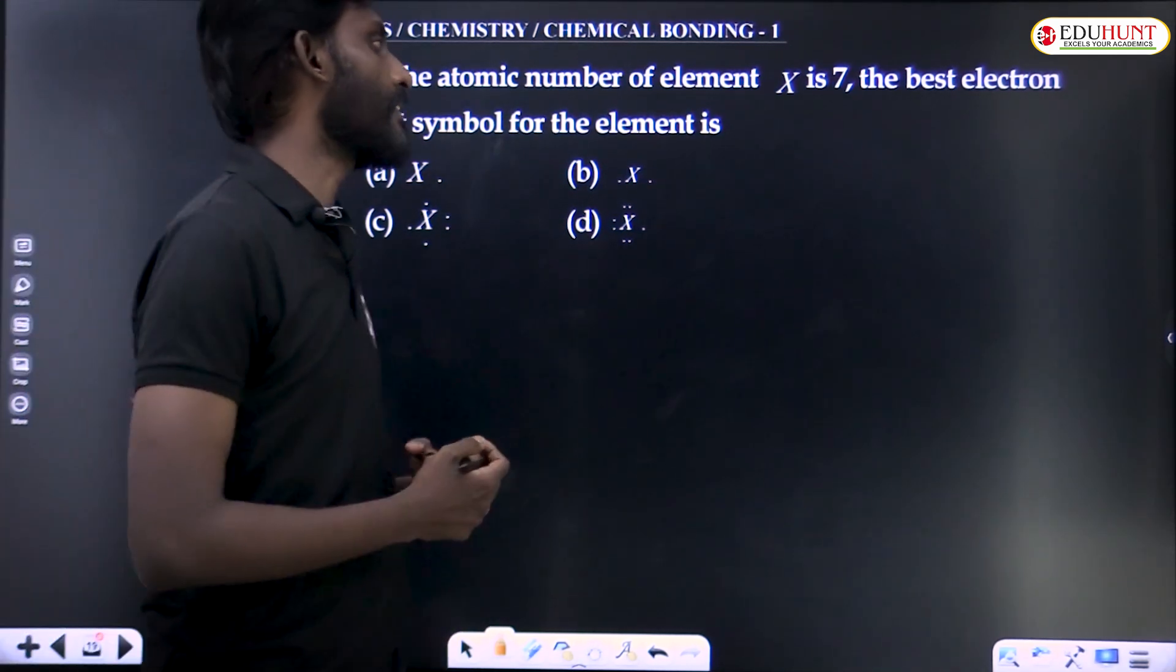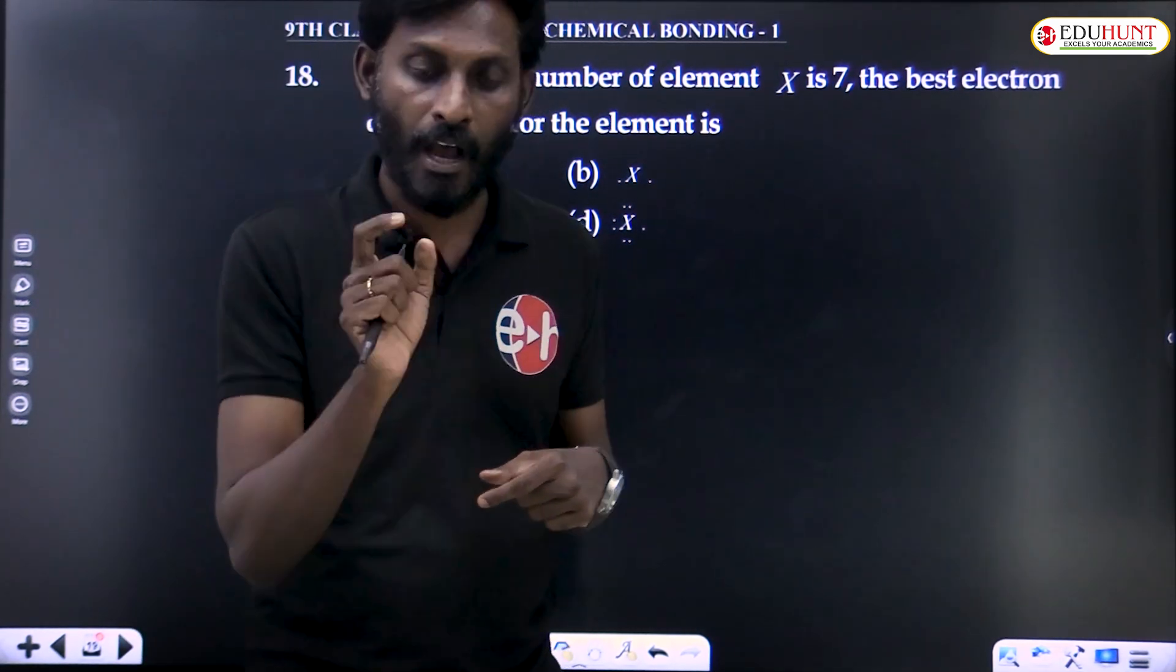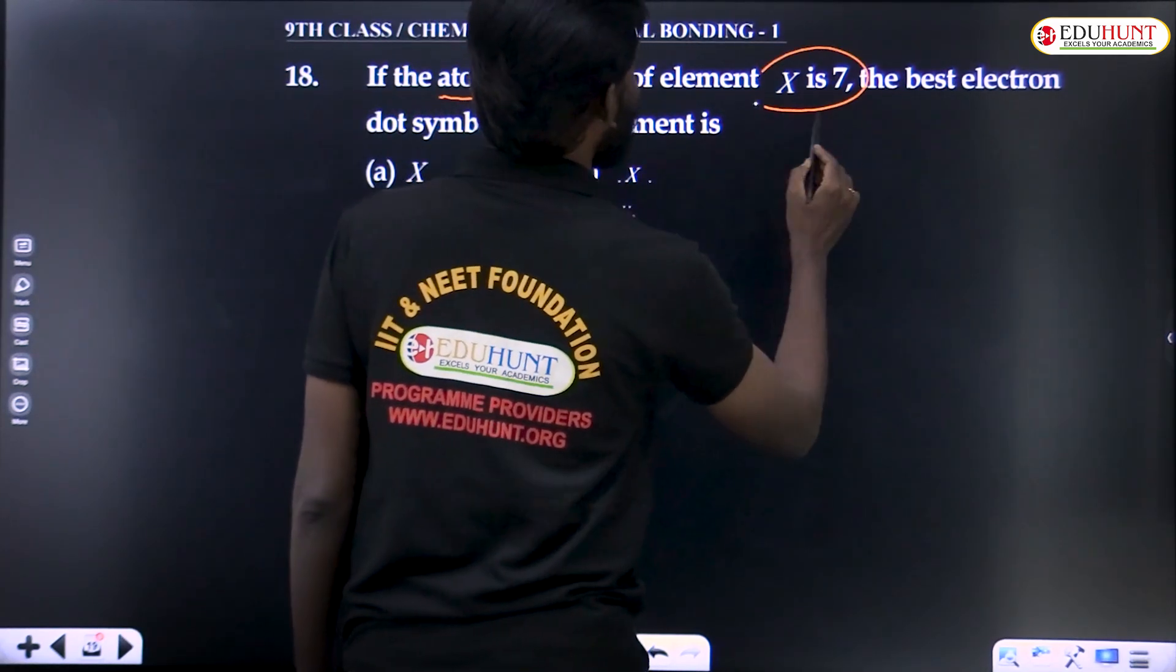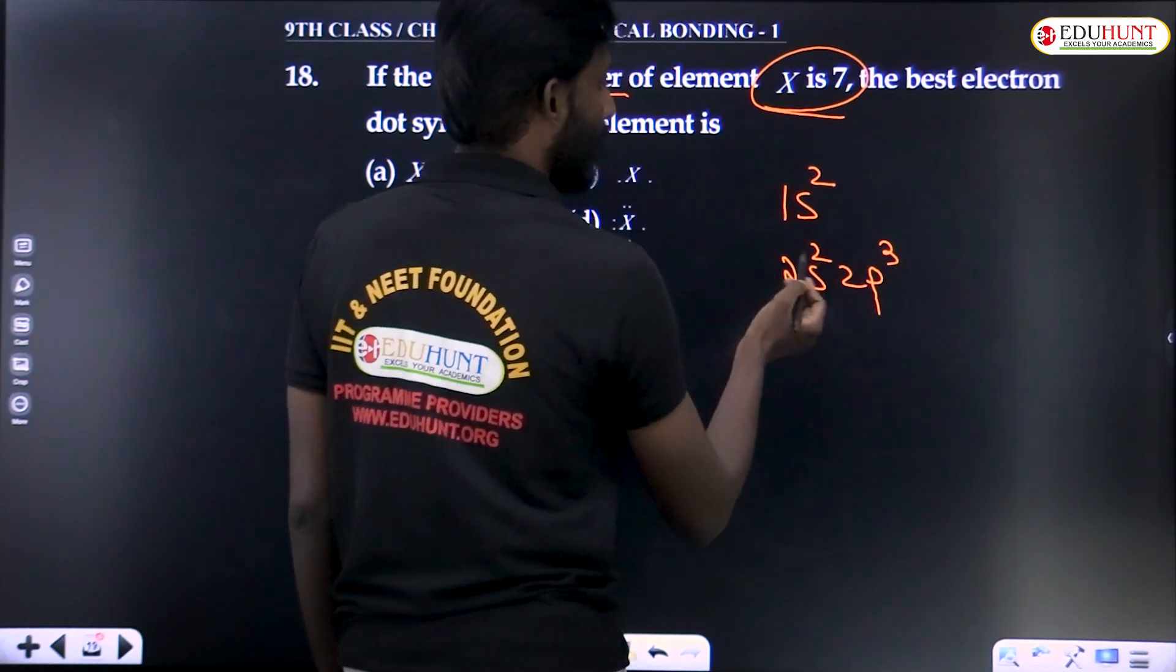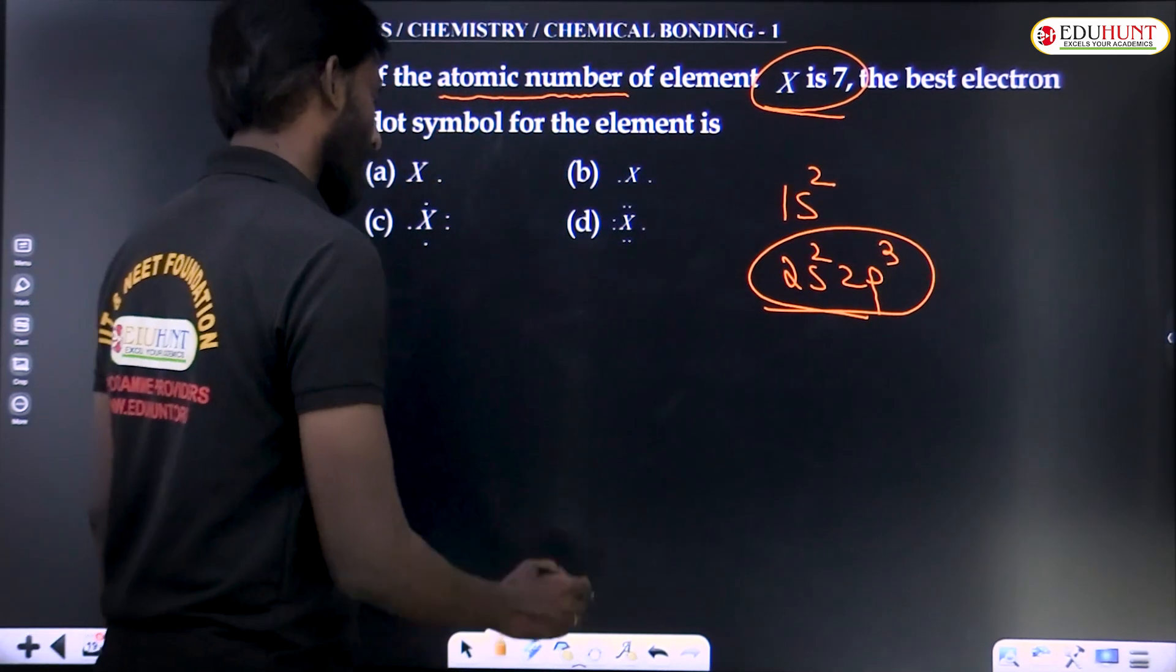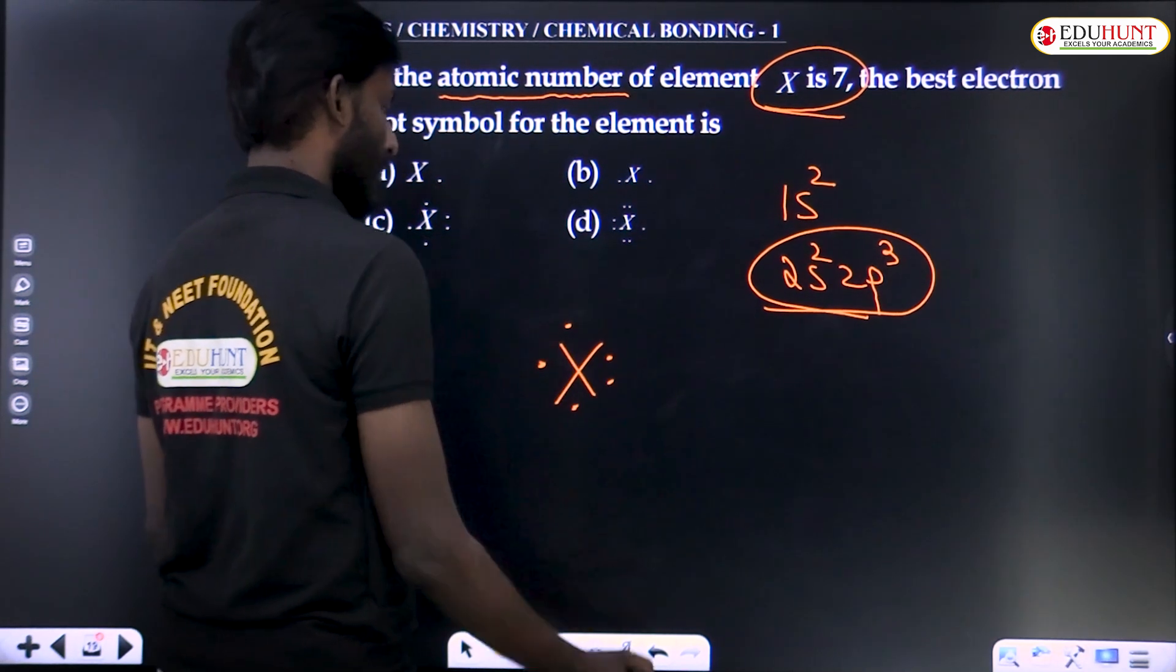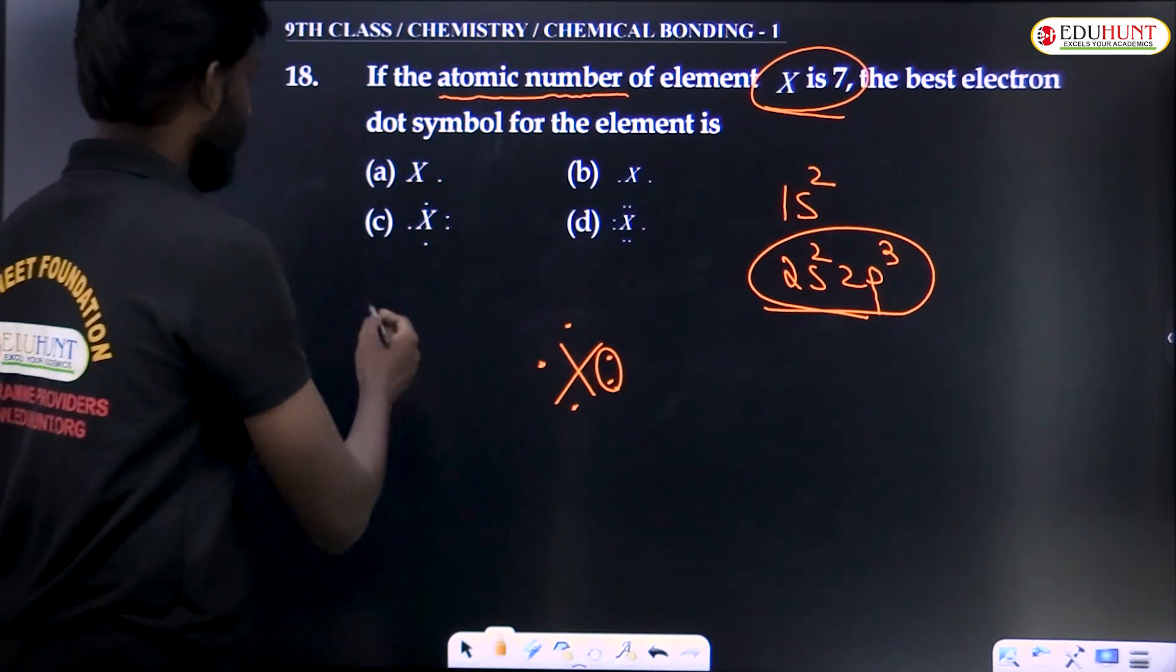If the atomic number of element X is 7, the best electron dot symbol for the element. If the atomic number is 7, the electronic configuration will be 1s2 2s2 2p3. Seven electrons, and we need to represent only valence electrons in the Lewis dot symbol. Let's say this is X. How to write these five electrons? 1, 2, 3, 4, 5. You may have one pair and three unpaired electrons. So that will be C option.